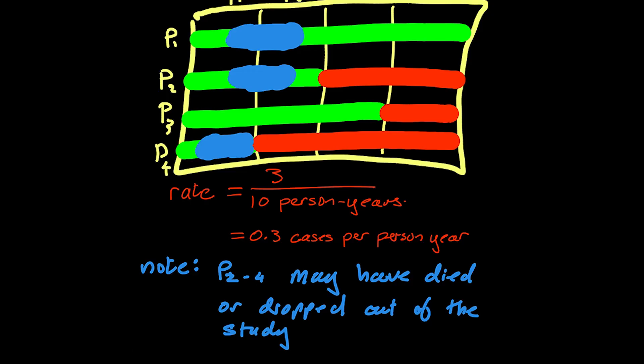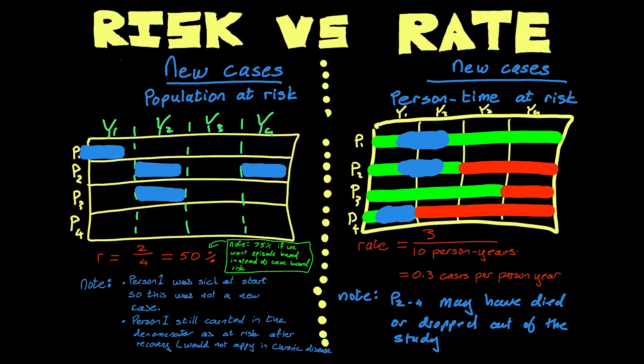So we count up the person years at risk. In this case, person 1 contributed 4 years, person 2, 2 years, person 3, 3 years, person 4, 1 year. You add it all up, it's 10 person years at risk. There were three incidents of disease, so it's 0.3 cases per person year. So that's rate. The big differences between risk and rate is that rate does take time into account in the denominator. Risk does not. Risk tells us about the probability of an individual developing a disease and rate really tells us about the speed or intensity of the disease occurrence in a population.